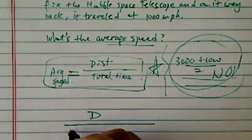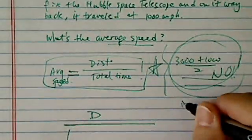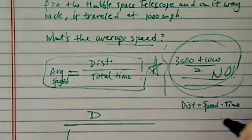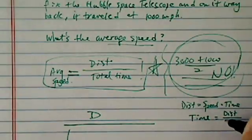The time it took on the way to get there, now remember distance equals speed times time. So therefore, when you want time, that's distance divided by speed.